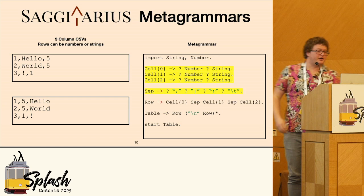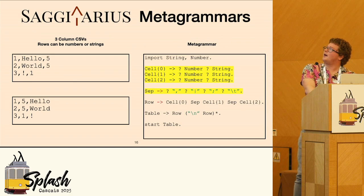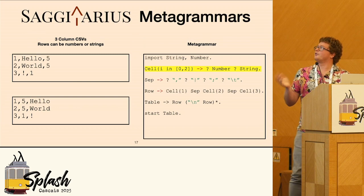But this is a little heavy syntax. So I'm going to combine all these cell zero, one, twos into just a cell I, where I ranges from zero to two, and then I've kind of expressed multiple grammars in a terse way just to make things a little easier.